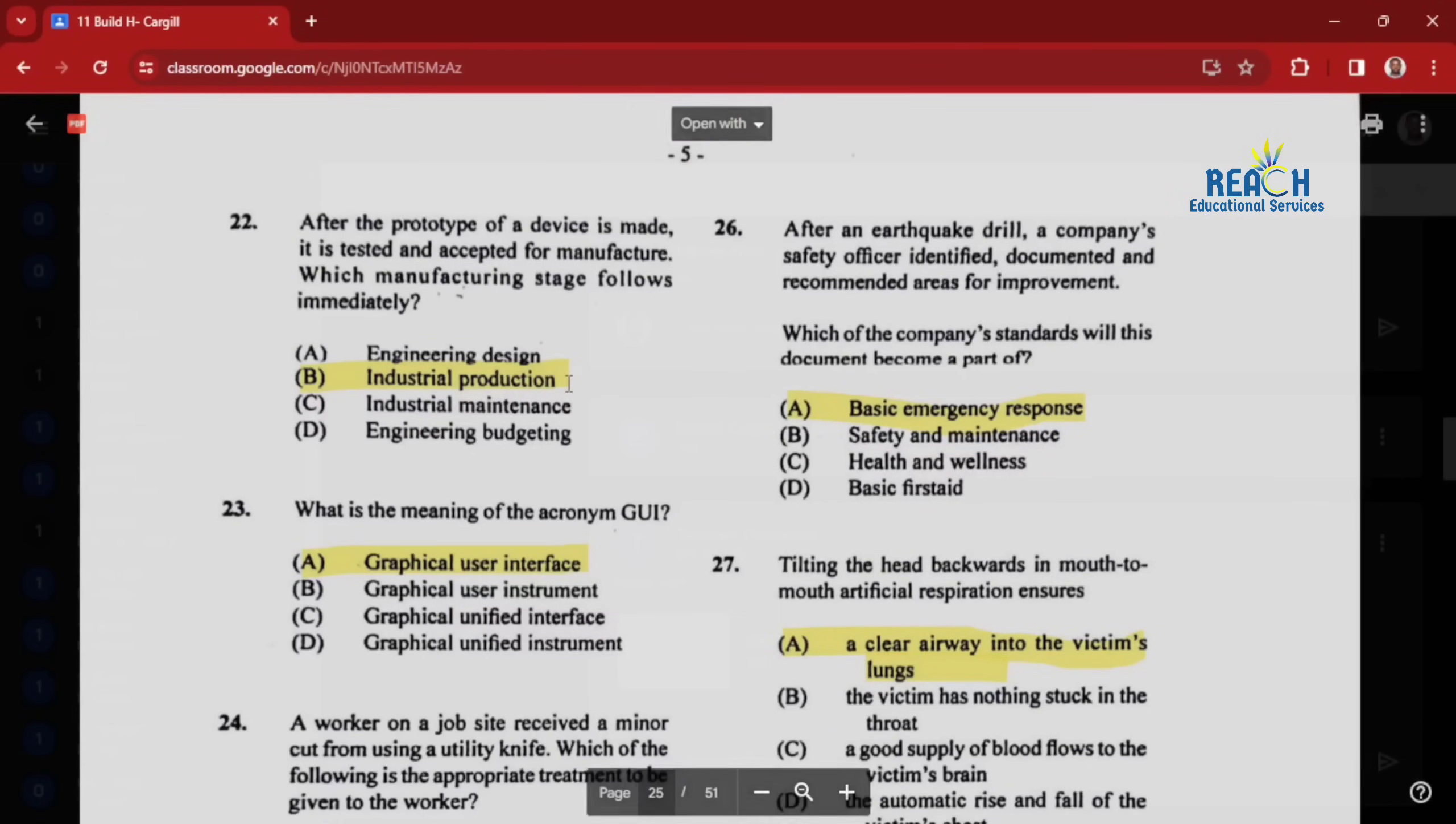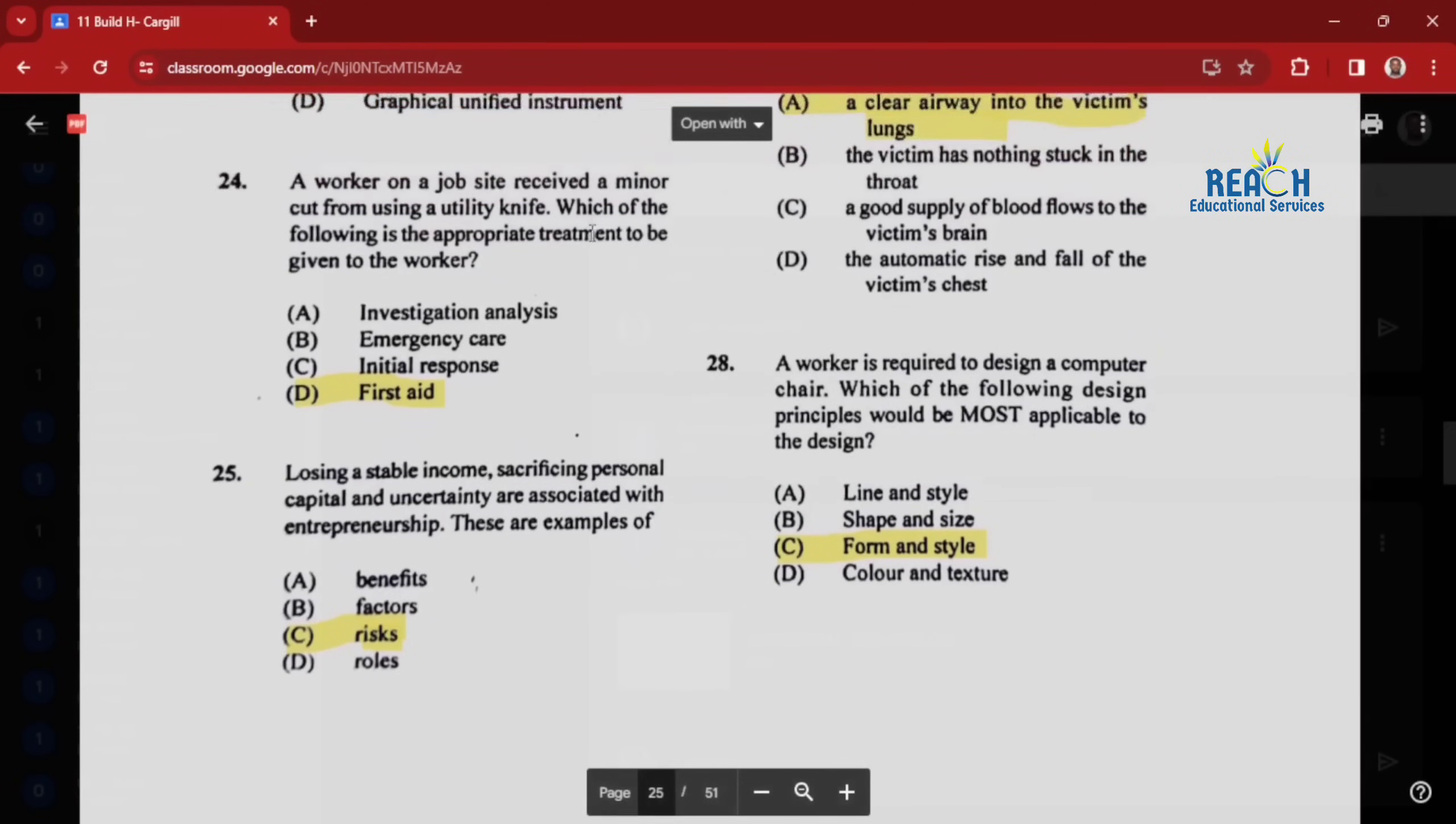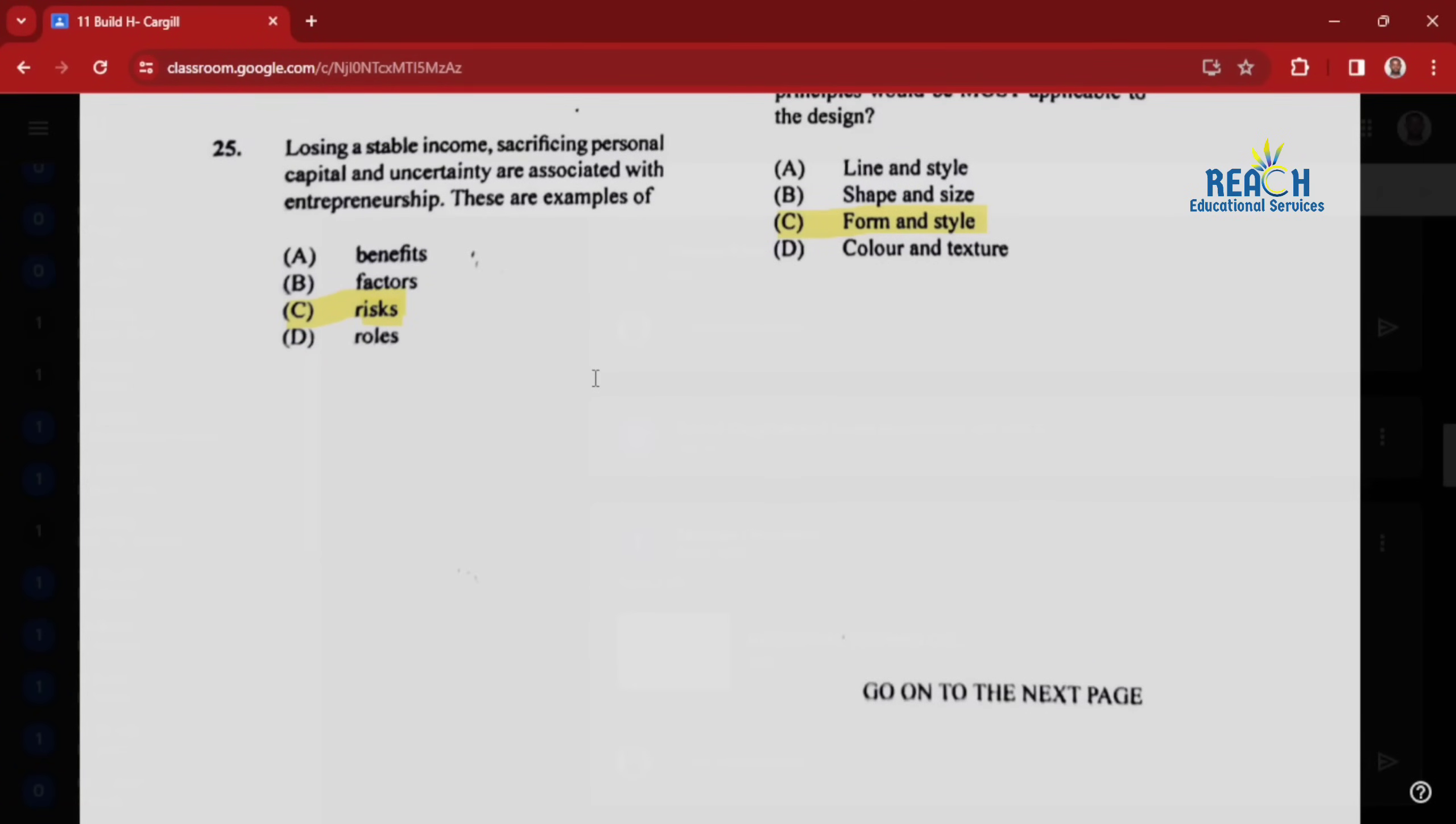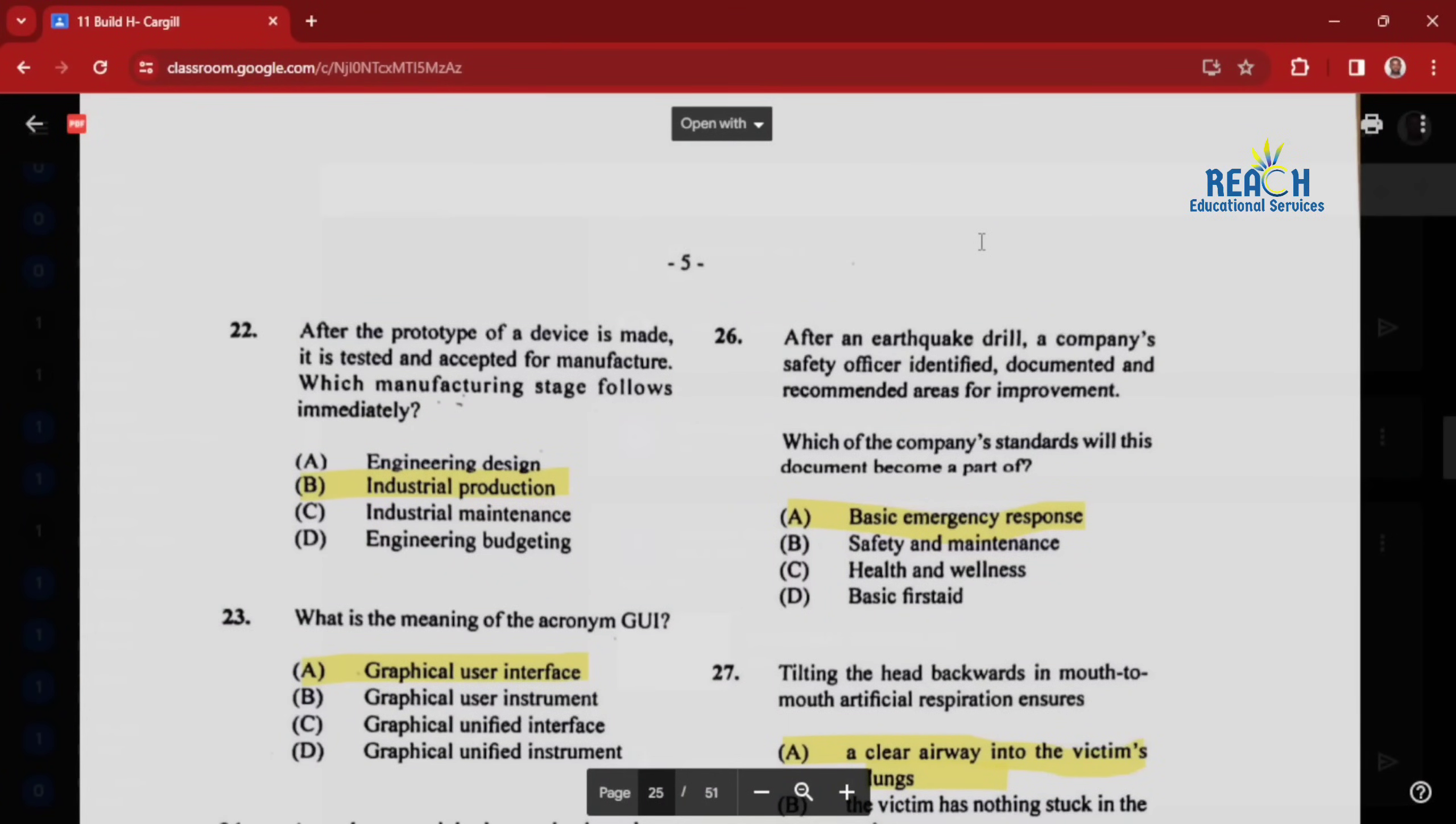Question twenty-three: what is the meaning of the acronym GUI? That stands for graphical user interface. Question twenty-four: a worker on a job site received a minor cut from using a utility knife. Which is the appropriate treatment? That would be first aid. Question twenty-five: losing a stable income, sacrificing personal capital, and uncertainty are associated with entrepreneurship. These are examples of risks.